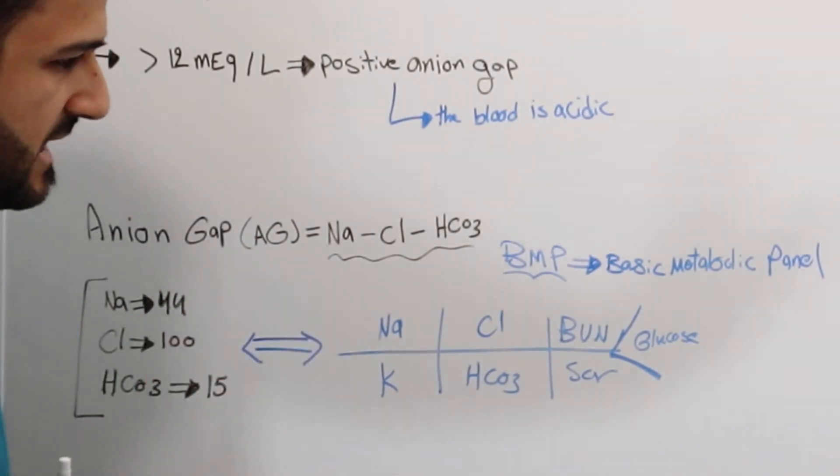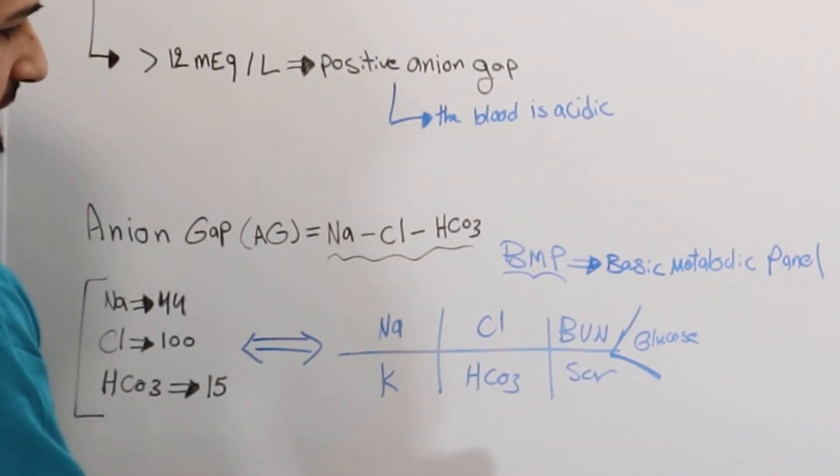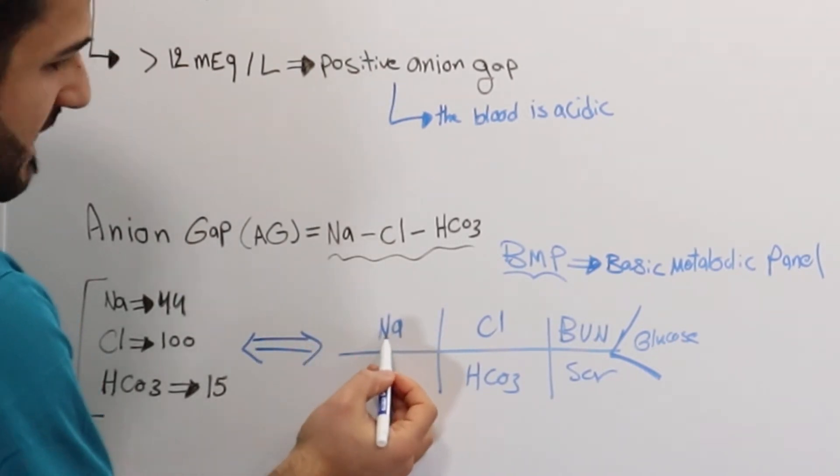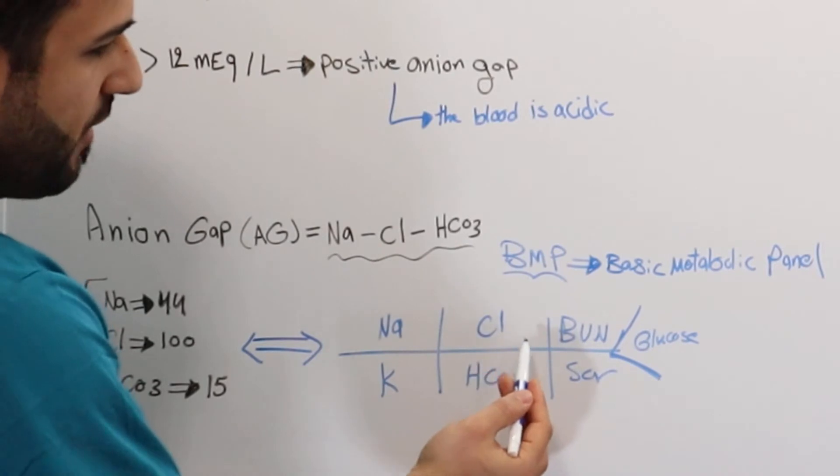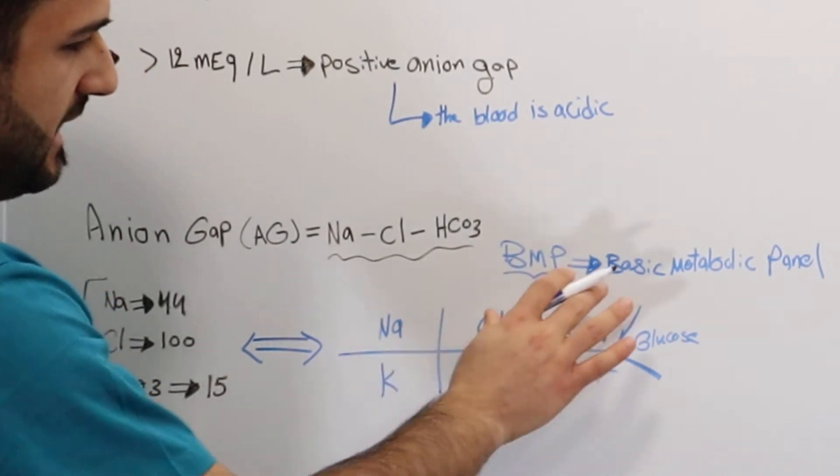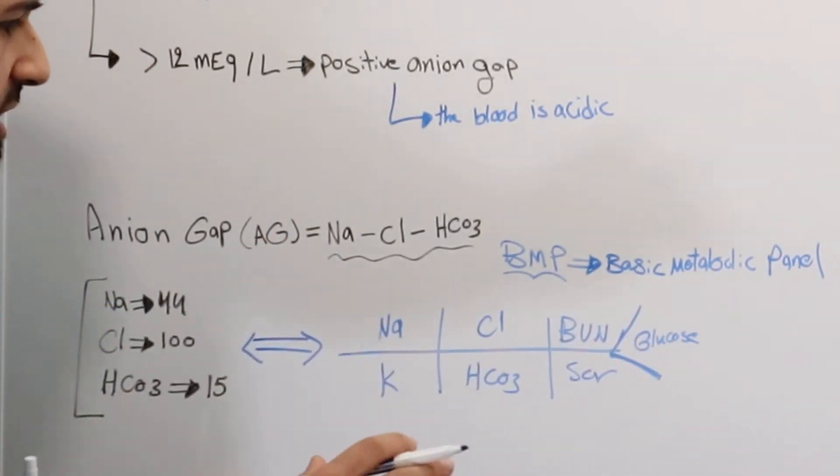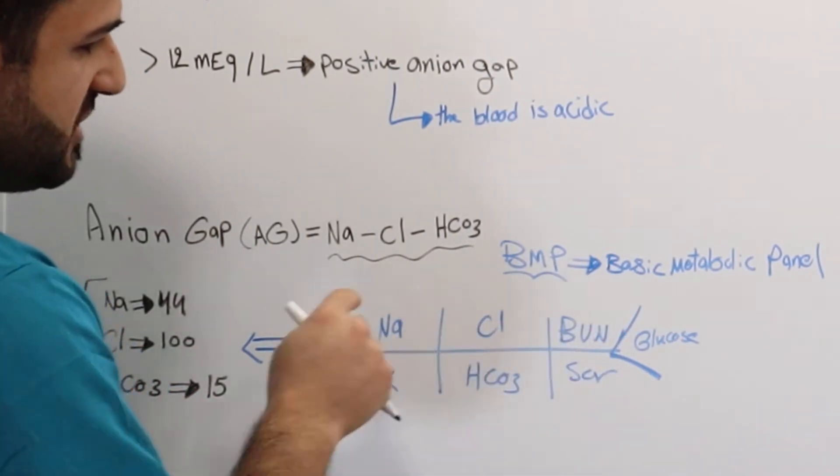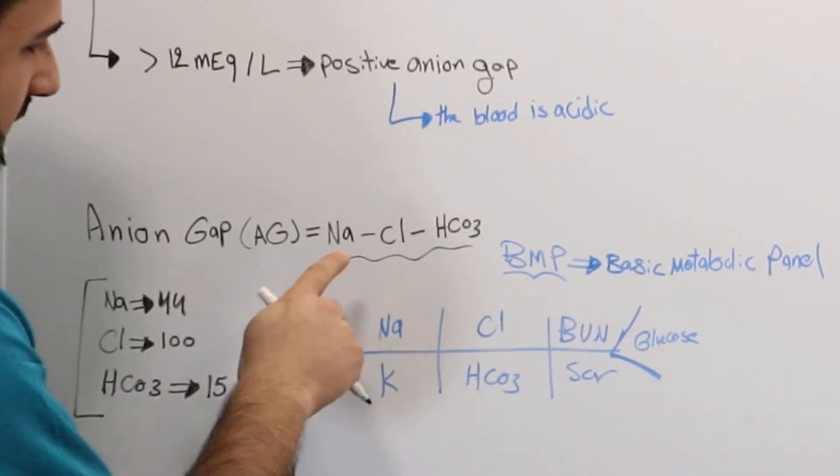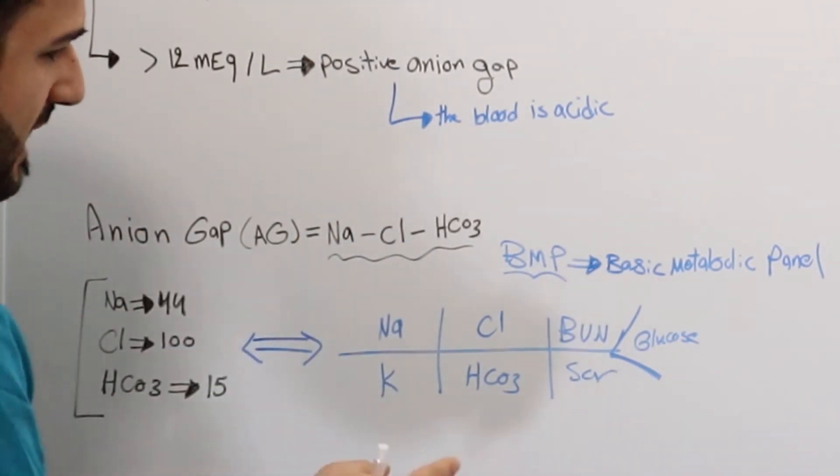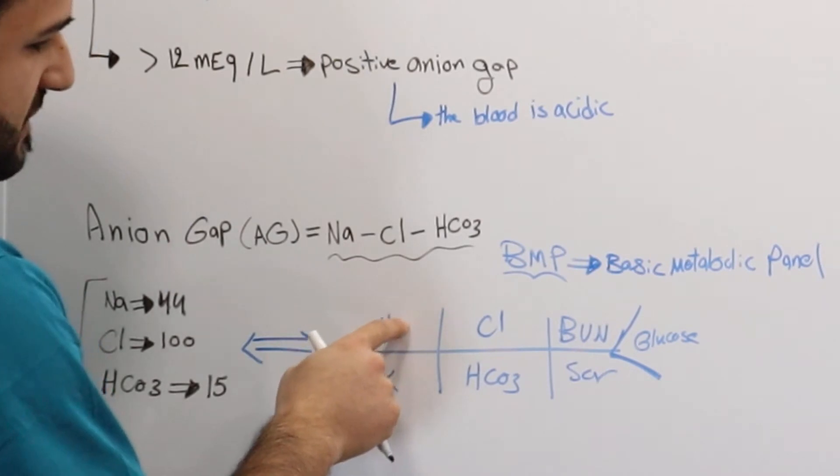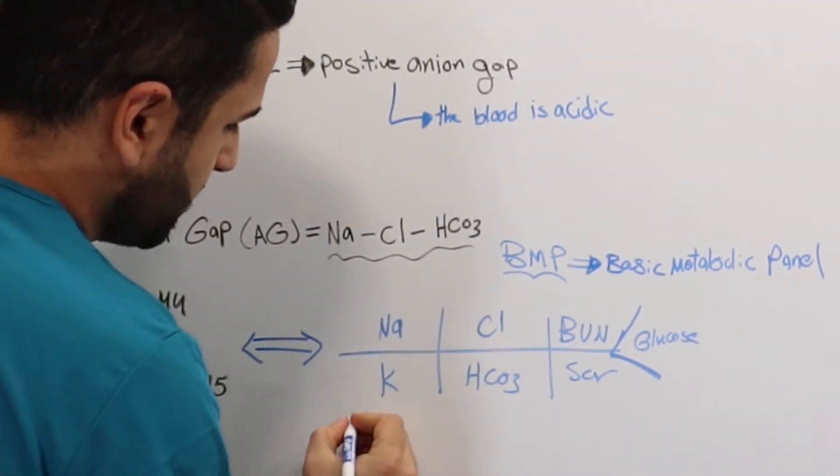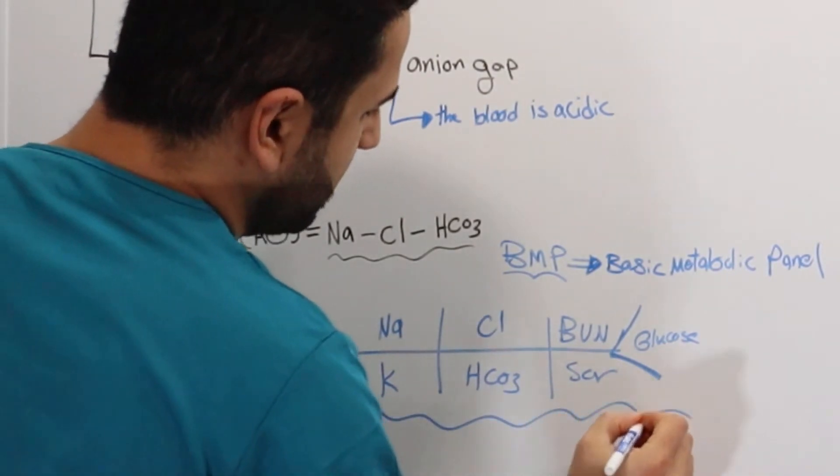Because in your test, you may be given this, and instead of sodium you'll see a value in here, and a value instead of chloride, BUN, serum creatinine. You need to know where each one of these is positioned in this fishbone to be able to collect these three values correctly. Because if you end up taking, let's say, potassium instead of sodium, then your calculation will be false. So make sure to keep this in mind, or memorize this fishbone.